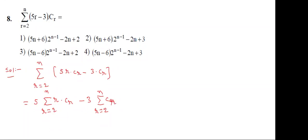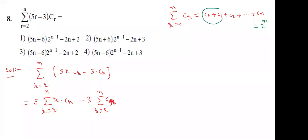For the second part: sigma from r=0 to n of Cr equals C0 + C1 + C2 + ... + Cn = 2^n (sum of binomial coefficients). But here the limit starts with 2, so C0 and C1 terms are missing. Send those two terms to the right hand side: C2 + C3 + ... + Cn = 2^n - C0 - C1 = 2^n - 1 - n.